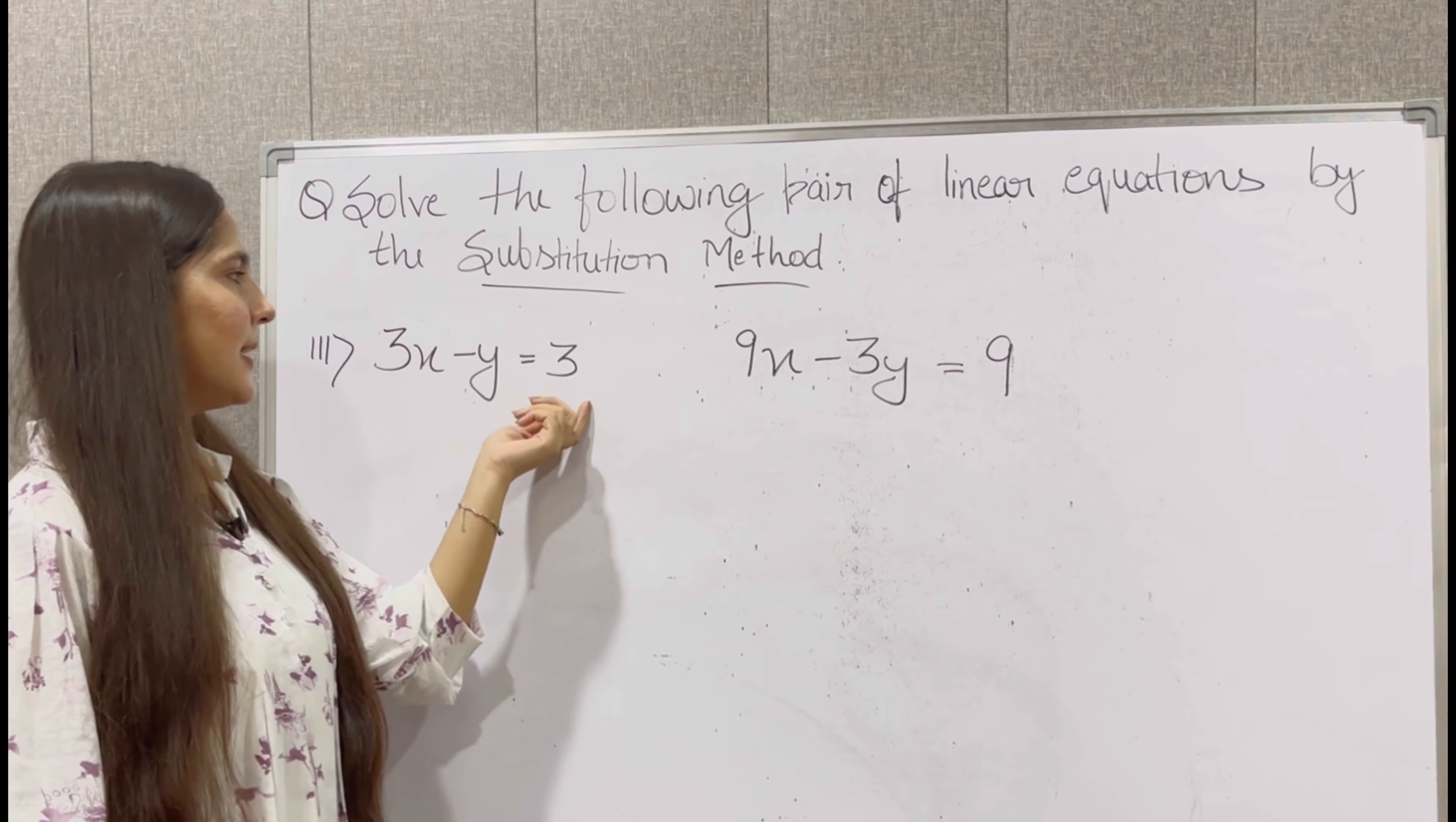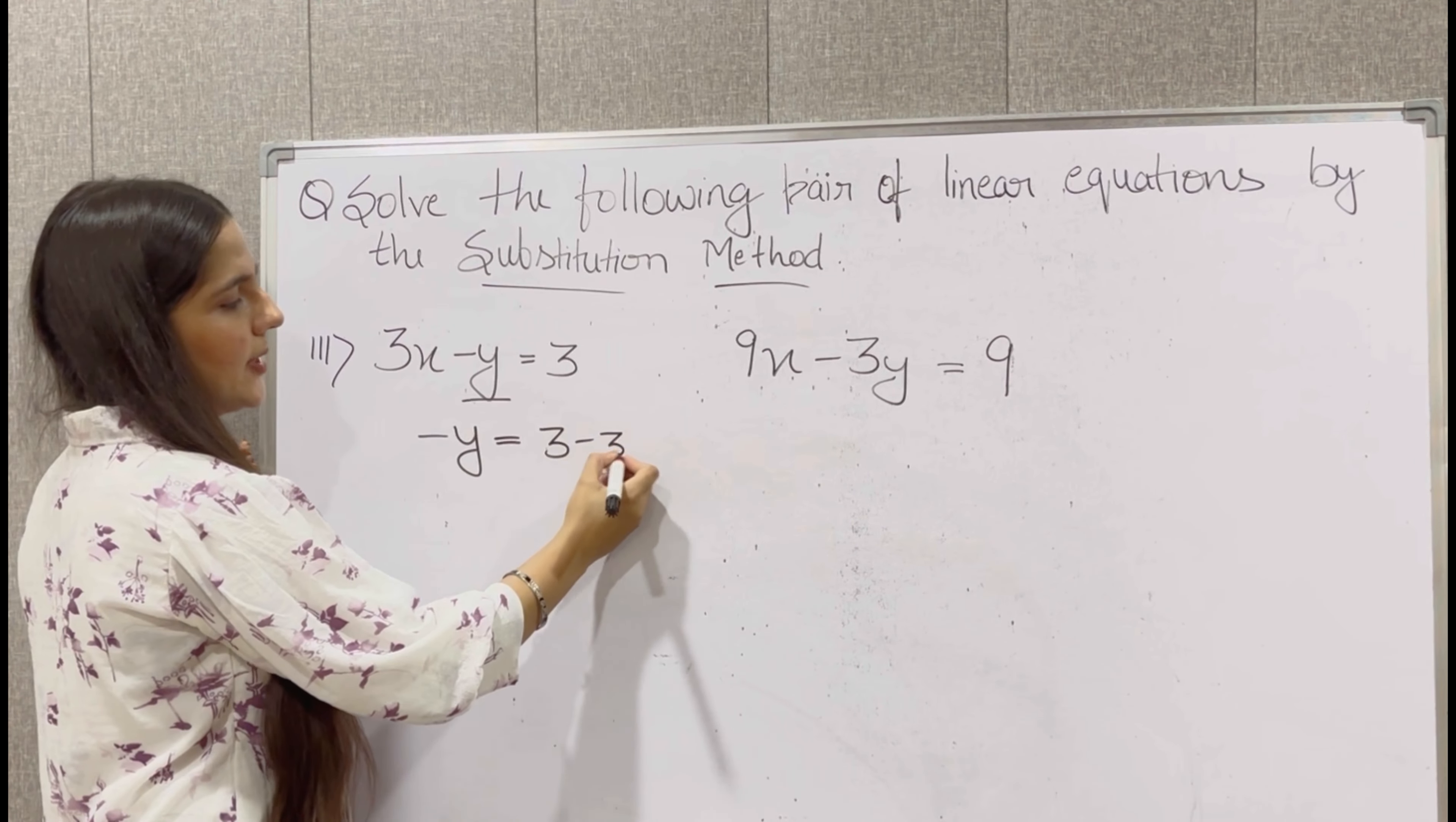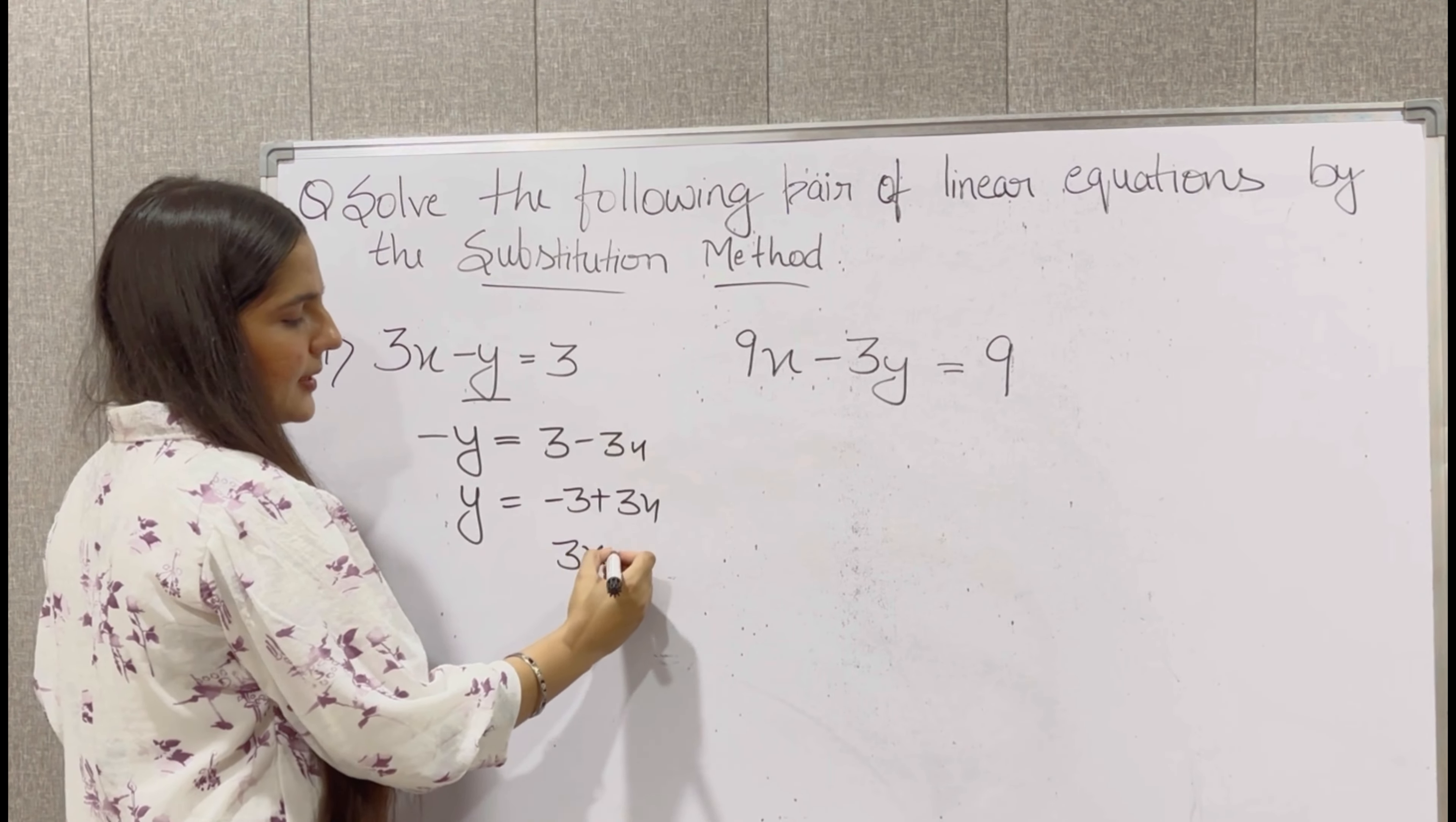Now let's solve the next part. Third part is 3x minus y is equal to 3, and 9x minus 3y is equal to 9. So here we take out y's value. So minus y is equal to 3 minus 3x. But this is minus y, we need the value of y. So multiply both sides by minus. So y is equal to minus 3 plus 3x. You can write it as 3x minus 3.